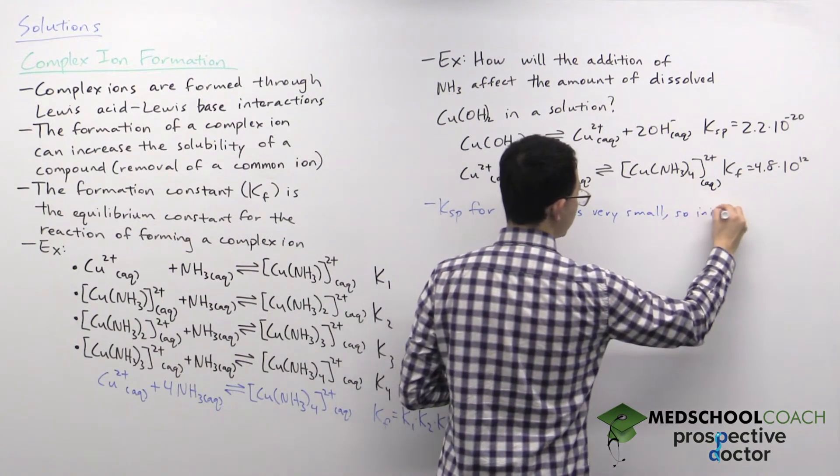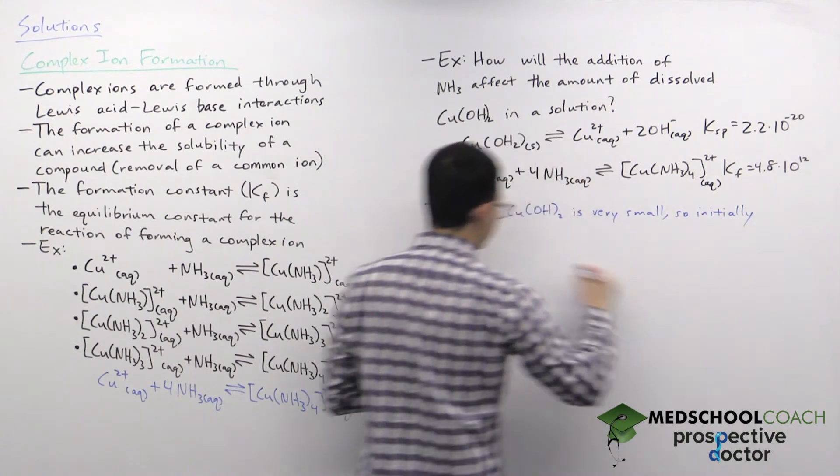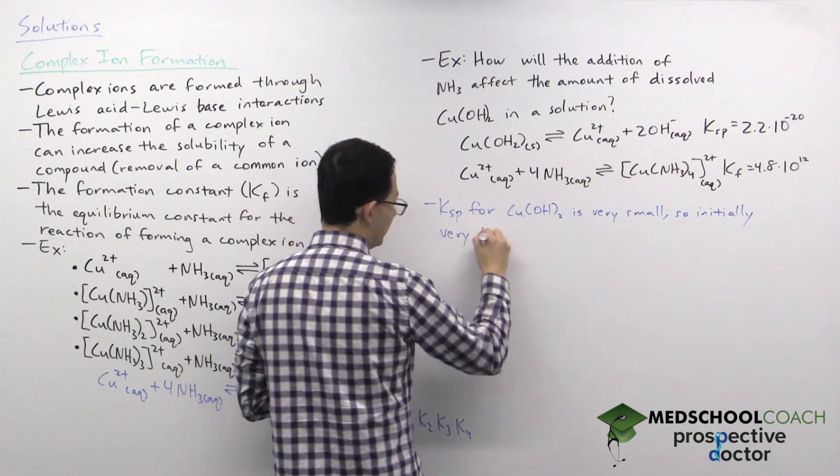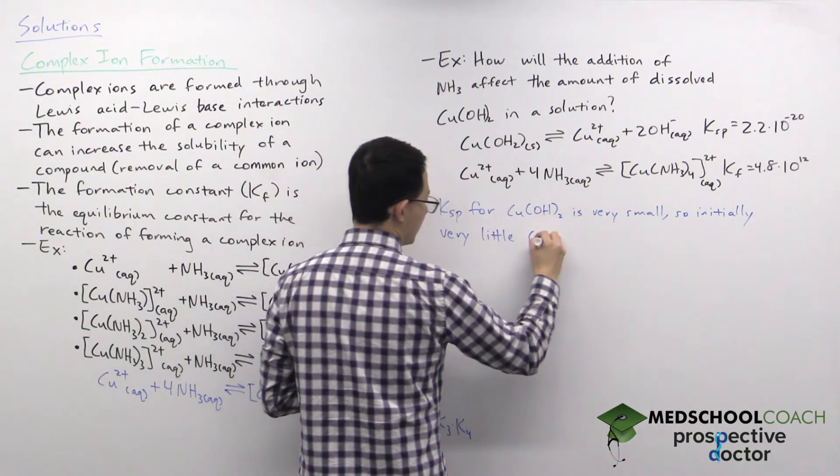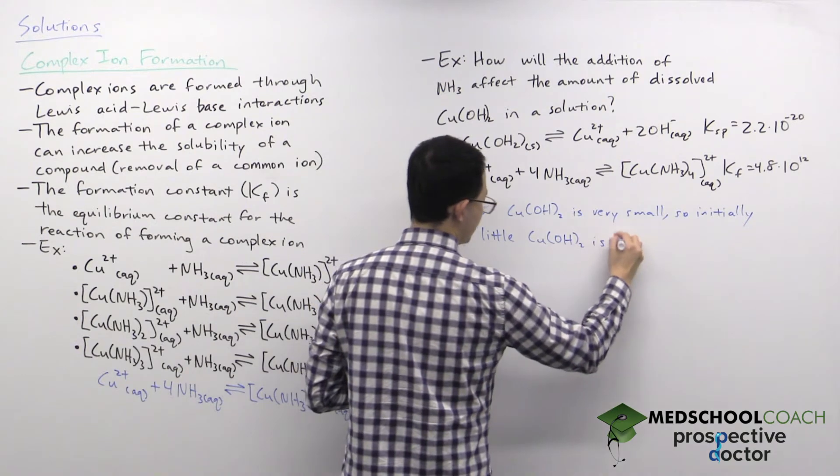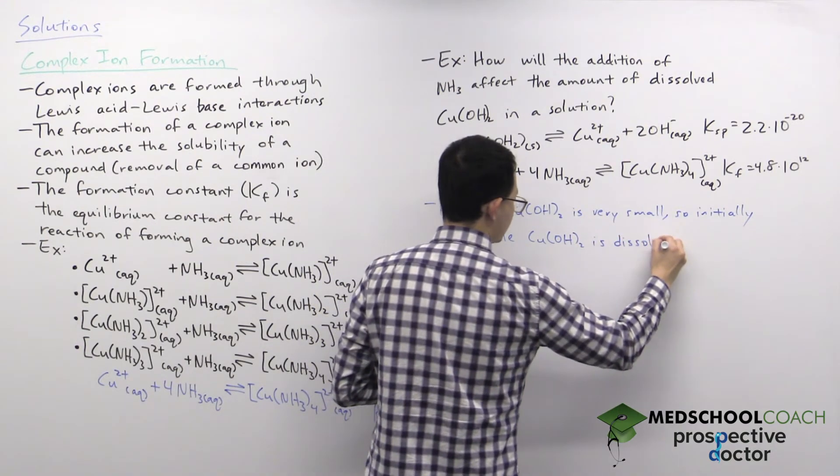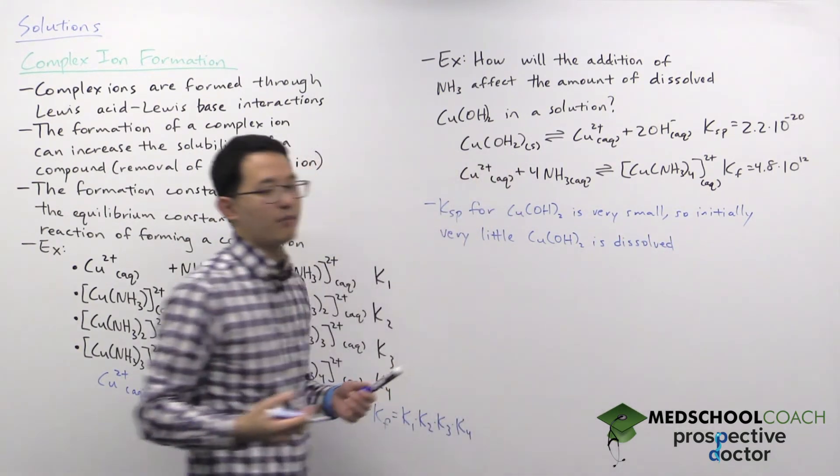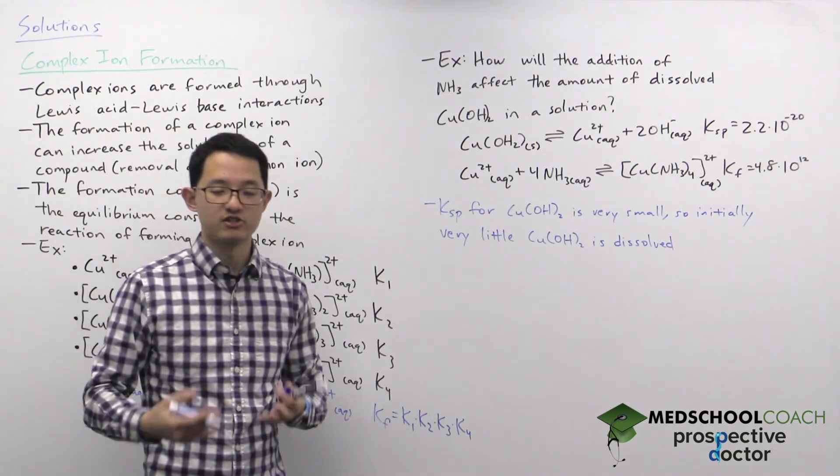Ksp for copper hydroxide is very small, so initially very little copper hydroxide is dissolved.